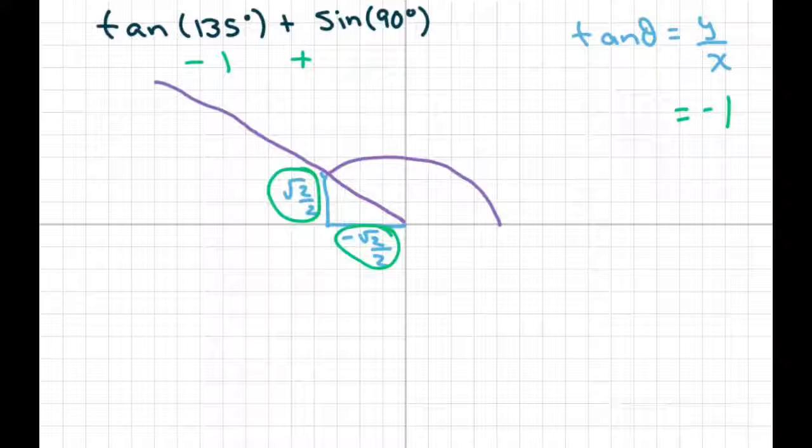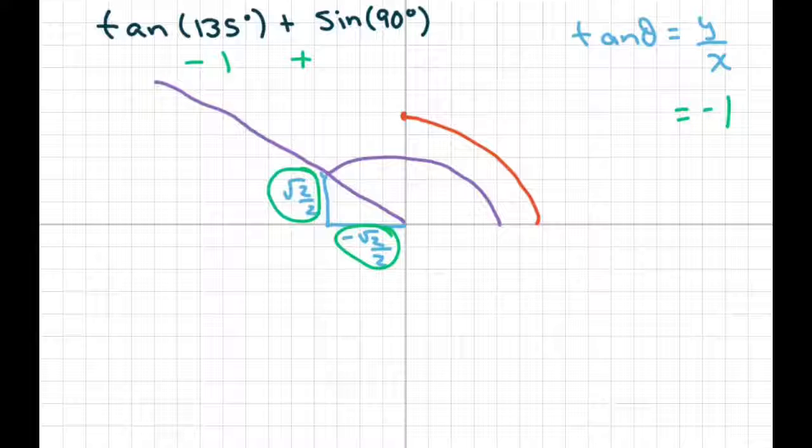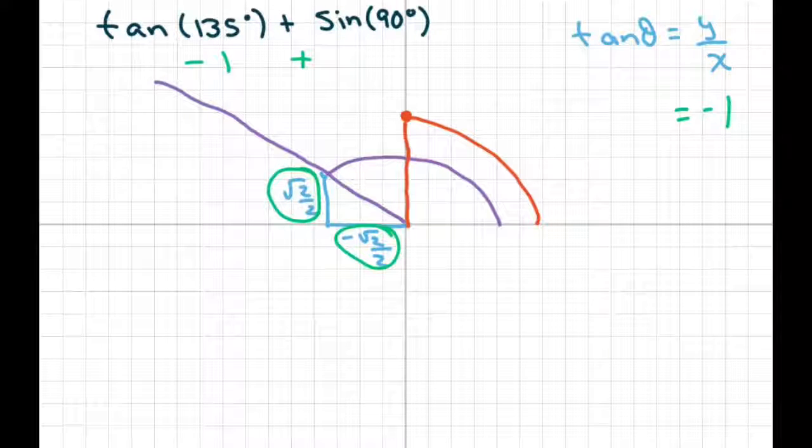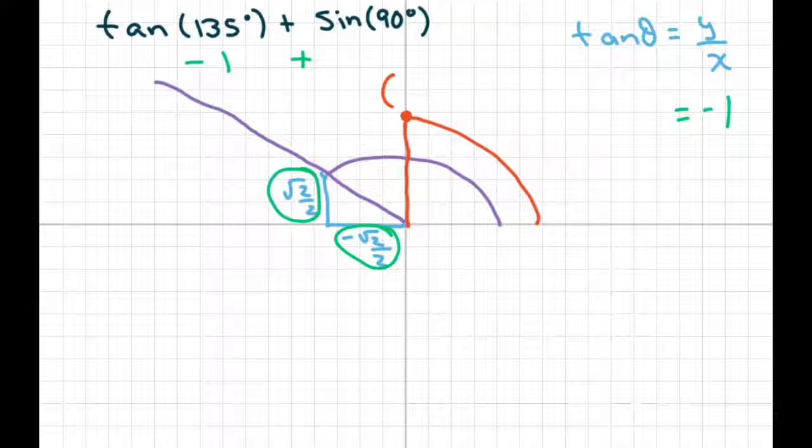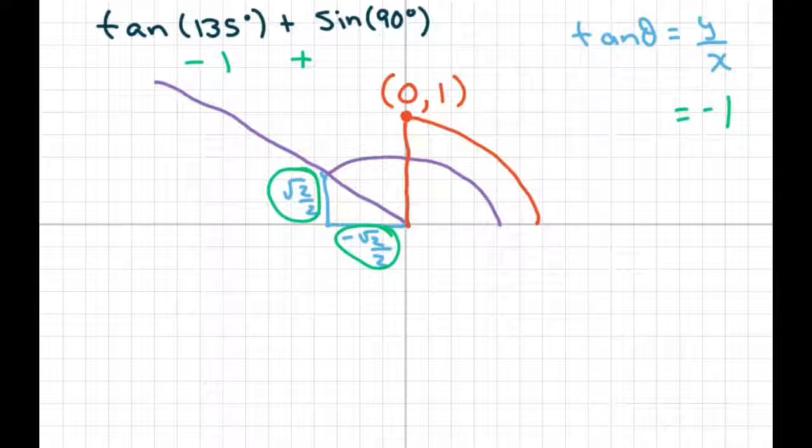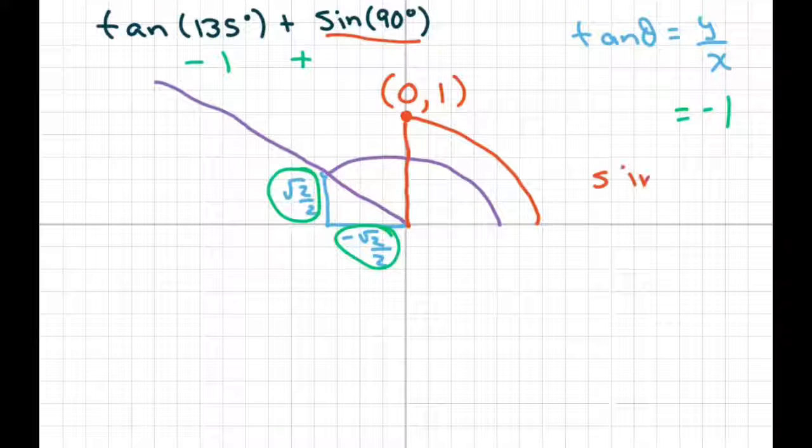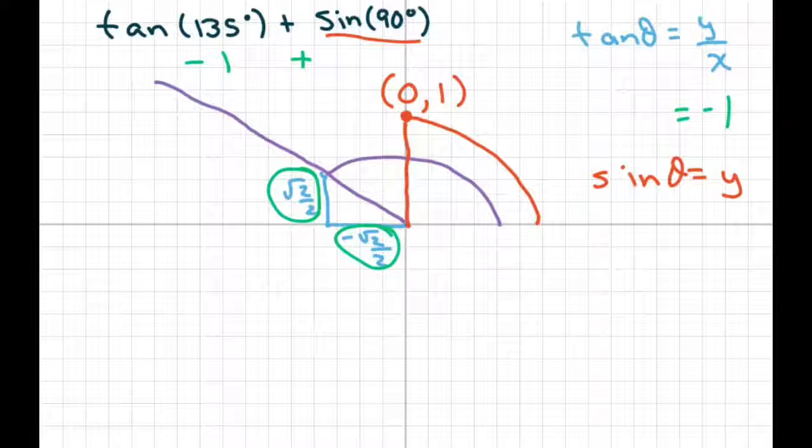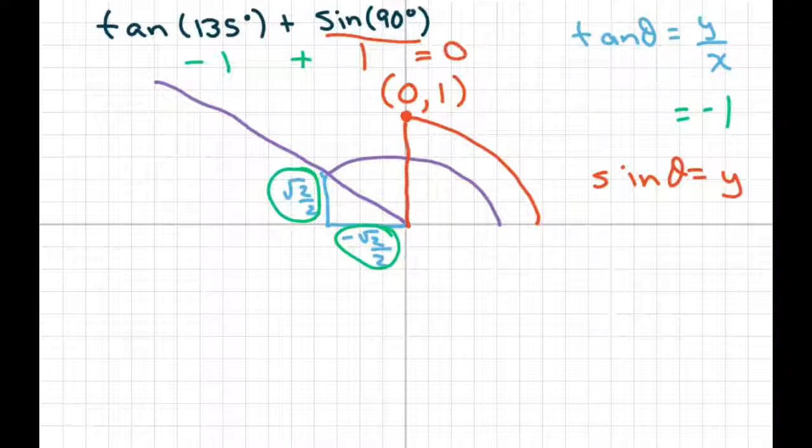And then sine of 90. So I'm at this point here with the radius being one. My x is zero and my y is one. Sine is your y. Remember sine of theta equals your y. So your y is one. So this equals one. So negative one plus one equals zero.